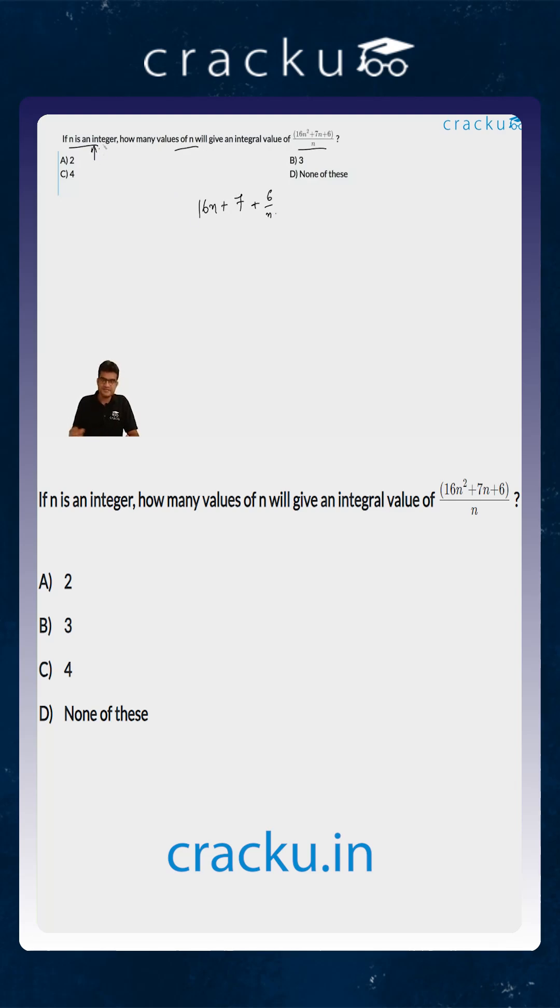You are told that n is already an integer, so 16n will be an integer. 7 also is an integer. So you essentially want 6 by n to be an integer, or you want n to be a factor of 6.